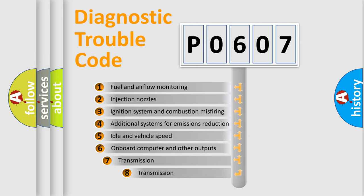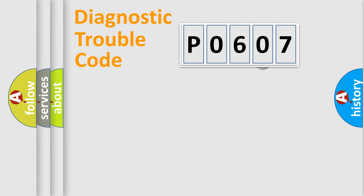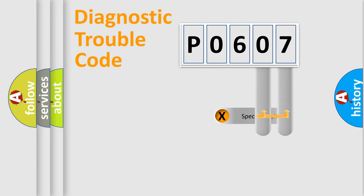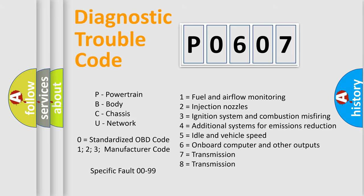The third character specifies a subset of errors. The distribution shown is valid only for the standardized DTC code. Only the last two characters define the specific fault of the group. This division is valid only if the second character code is expressed by the number zero.